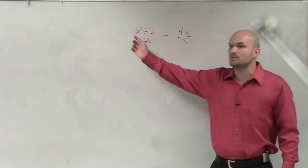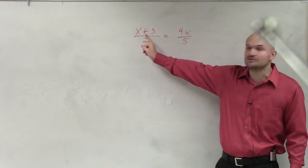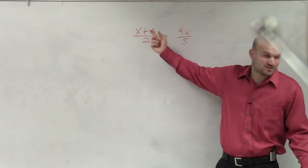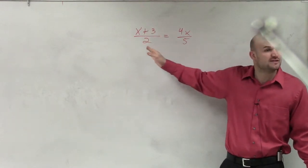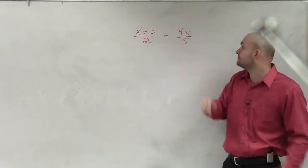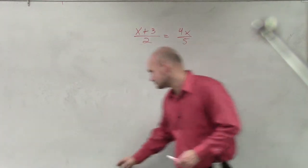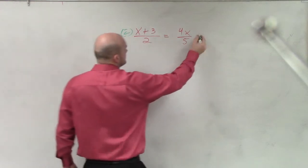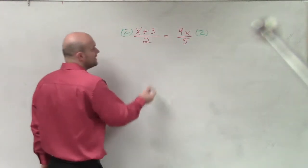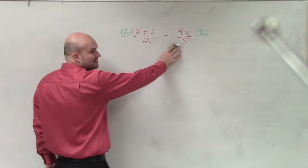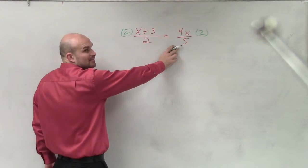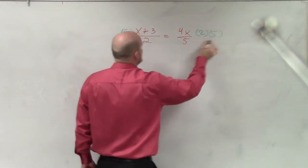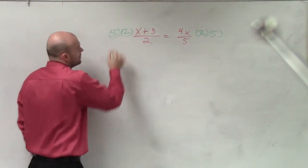So what is happening to this variable? Mario — it's being divided. It's also being added, right? But we can undo the division by multiplying by 2 on both sides. And then here, what is happening to this variable? It's being multiplied, but it's also being divided by 5. So I could multiply by 5 on both sides.